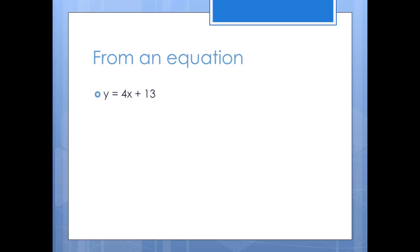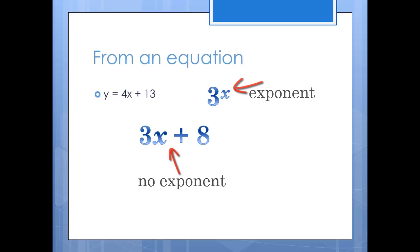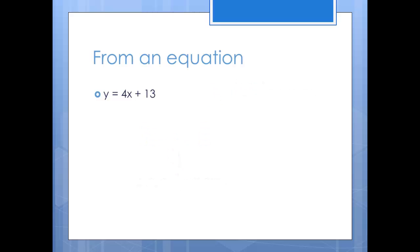To get the domain and range from an equation, it's important to know if you're looking at a linear or exponential equation. The easiest way to remember which is which is that an exponential has a variable in the exponent and a linear has no exponents. For this first one, there are no exponents, so the equation is linear.